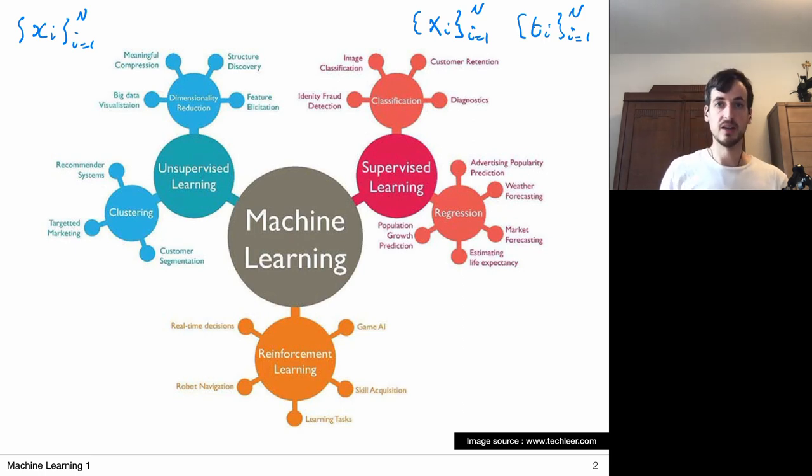Reinforcement learning methods is a kind of unique class of machine learning methods in the sense that if you look at supervised and unsupervised learning methods, the data is provided upfront, like hello algorithm, here is a lot of experience that I've gathered for you, now do your job and improve yourself.